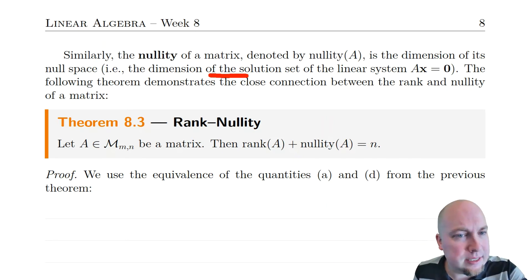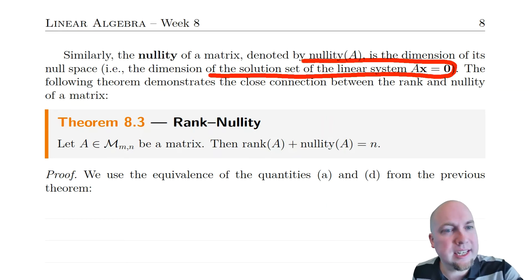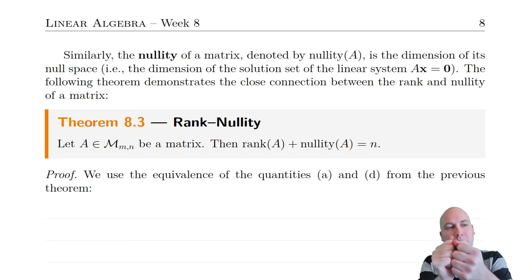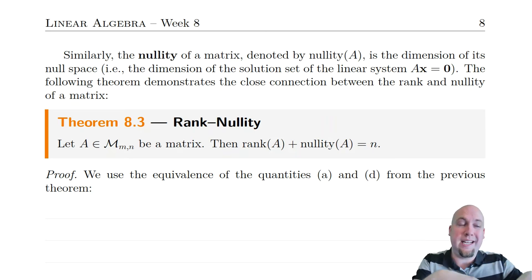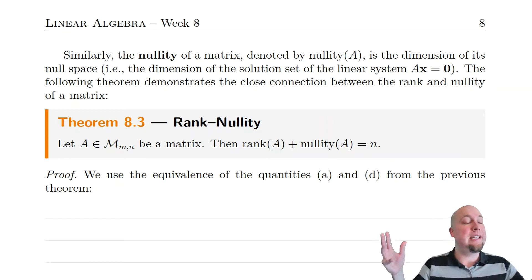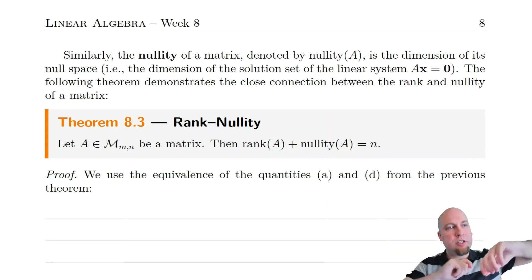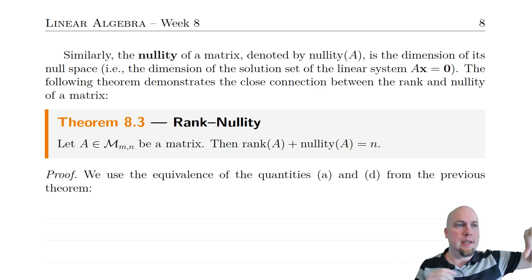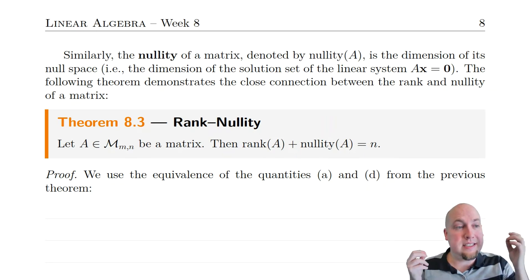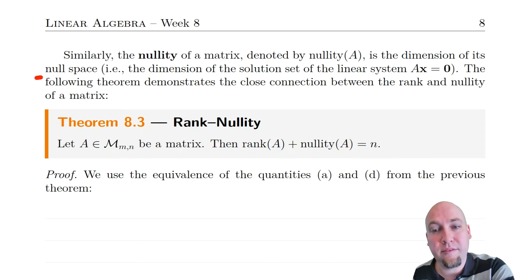Another way of thinking about it is to trace the definitions together: it's the dimension of the solution set of the linear system Ax=0. That linear system might have a unique solution — the all-zeros vector — in which case the null space has dimension zero and the nullity is zero. But that linear system might also have infinitely many solutions. If that solution set is a line, nullity is one; if it's a plane, nullity is two, and so on. The nullity is the dimension of that solution set — the dimension of the null space.